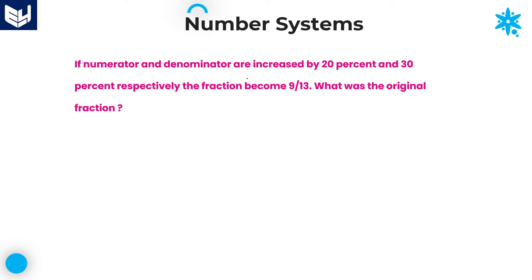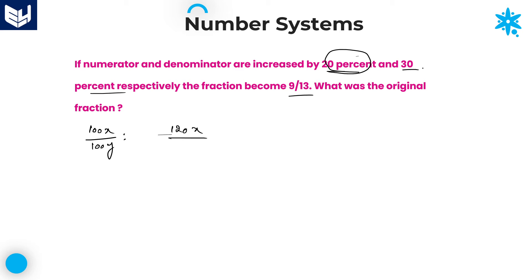Next question. If numerator and denominator are increased by 20% and 30% respectively, the fraction becomes 9 by 13. Let us take the fraction as 100x by 100y. Why am I taking 100x by 100y? Because the values are given in terms of percentage, that is the reason. Calculation is a little bit easier if I take 100x and 100y — even if you take x by y, you will get the answer, but the calculation part will be a little bit difficult. Here, the numerator is increased by 20%, therefore the original numerator becomes 120x. And coming to the denominator, that is also increased by 30%, therefore the denominator value is 130y.